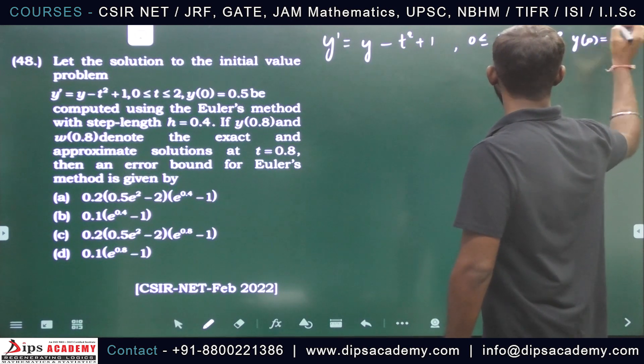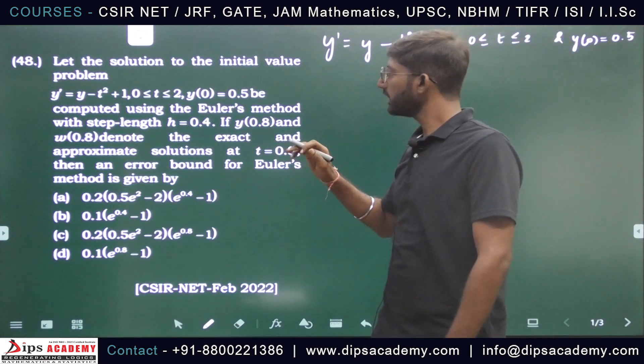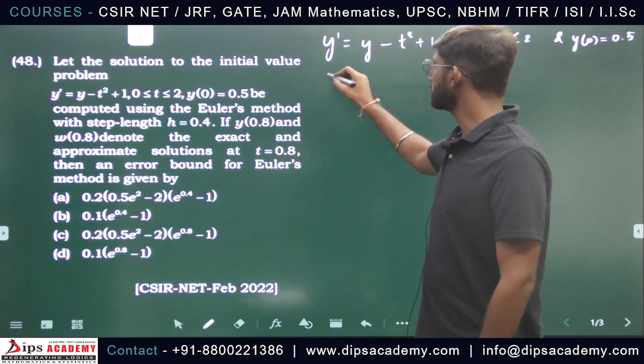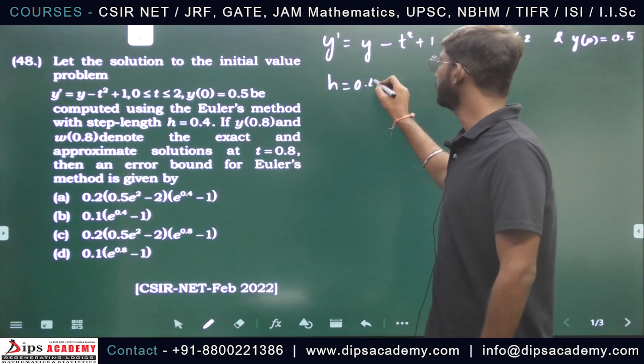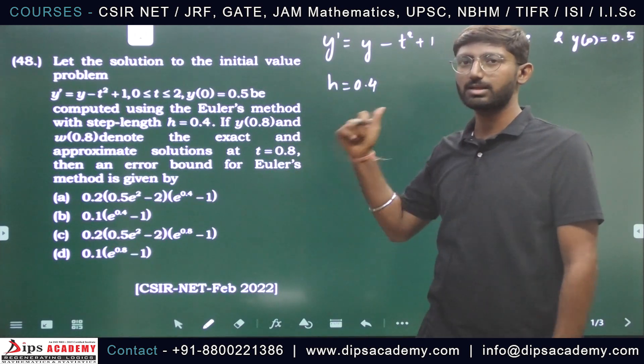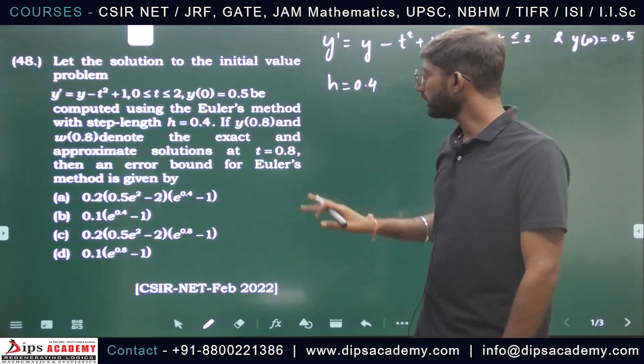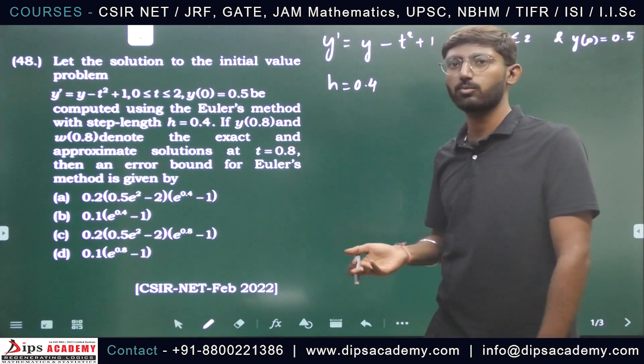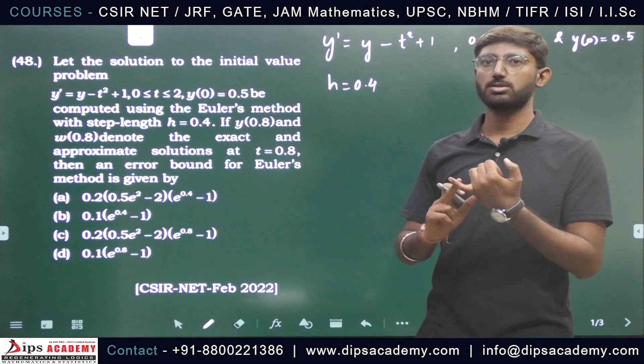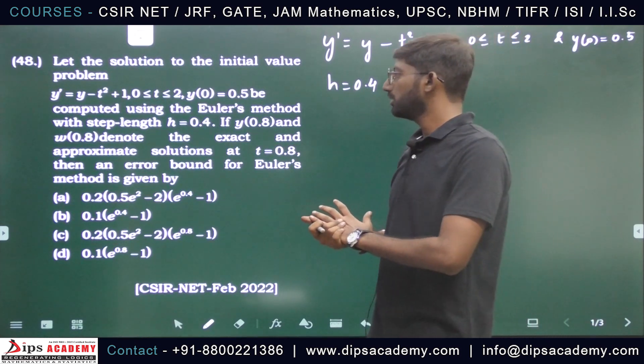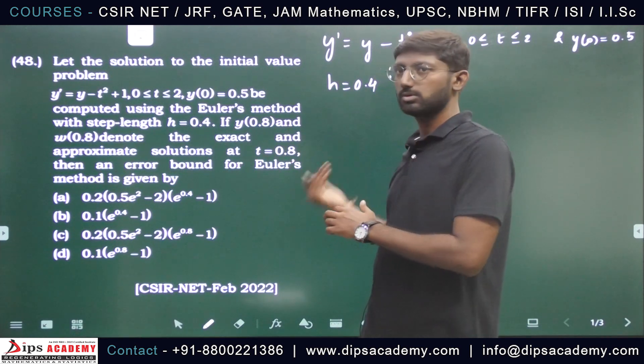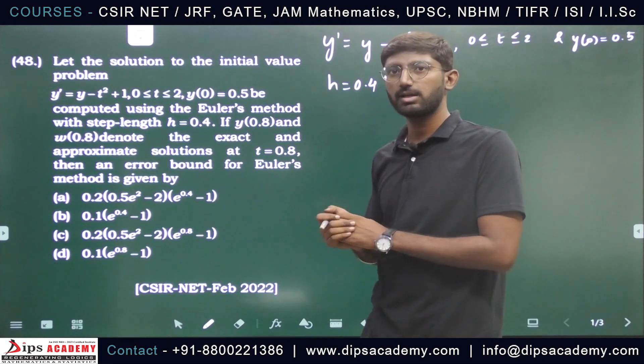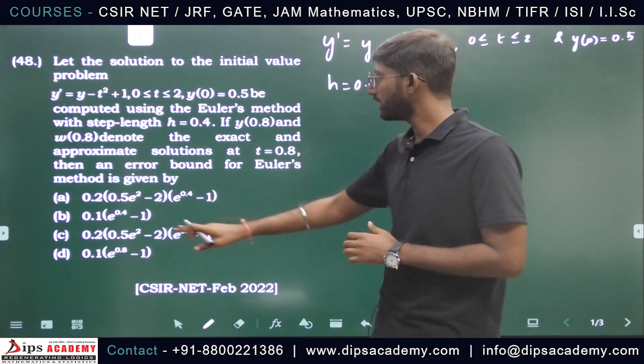It is computed using Euler's method with step length h equals 0.4. The Euler method is applied here. Then y(0.8) and w(0.8) are the exact and approximate solutions at t equal to 0.8. So the exact solution you get by solving the ODE, the approximate solution you get by applying the Euler method.